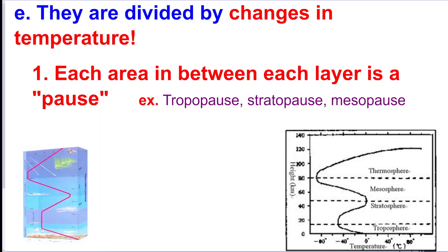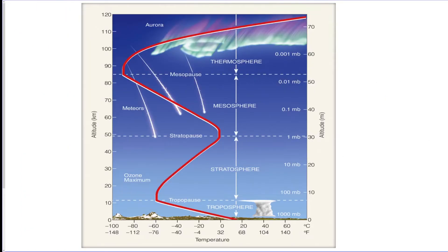The layers are divided based on when the temperature changes. So as you go up into the atmosphere, the temperature fluctuates. At first it goes down, and then it goes up, and then it goes down, and then it goes up. So each time it switches, that's the next layer of the atmosphere.